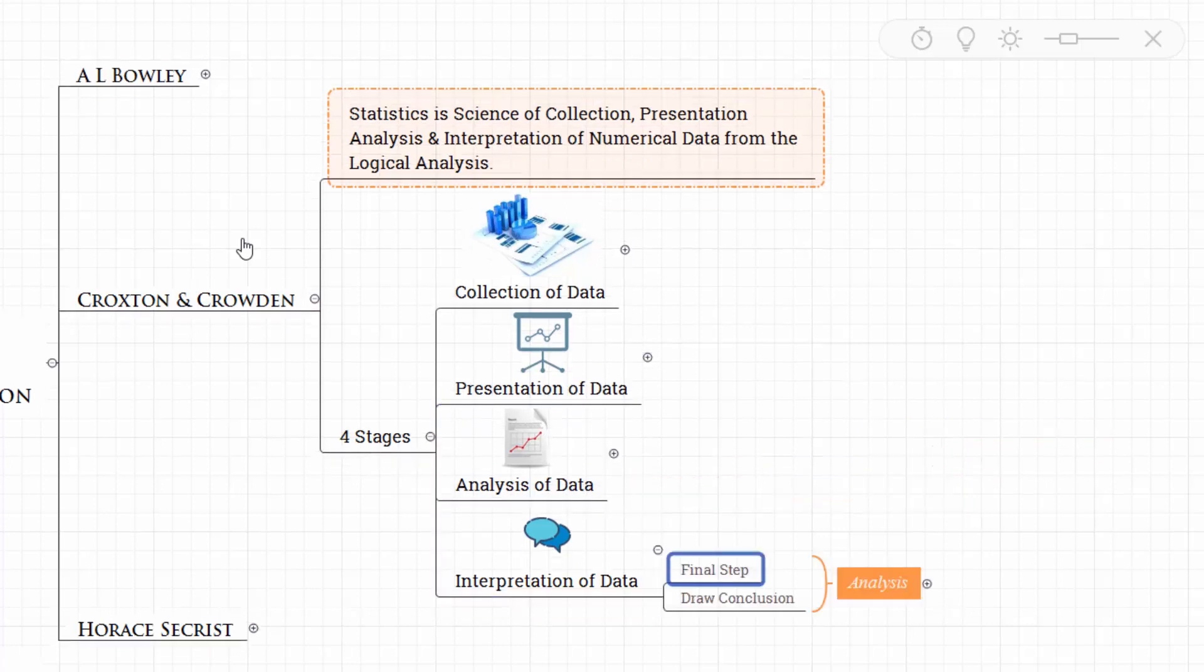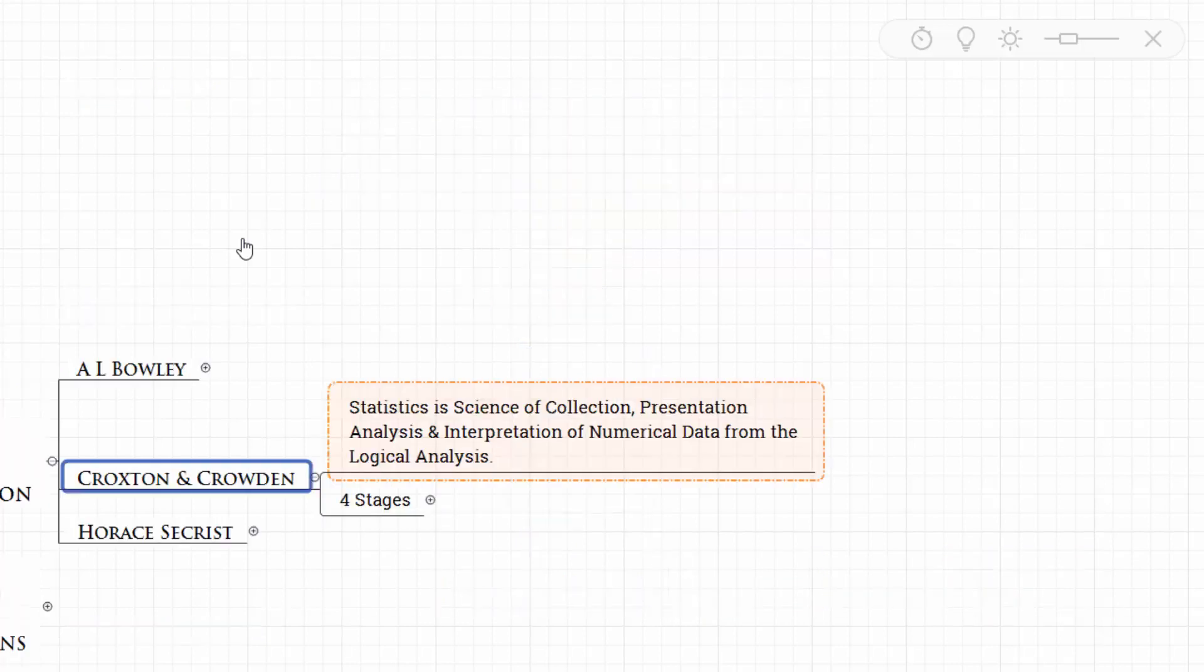Then finally, interpretation of data. This is the final step where we are going to draw conclusions from the analysis. This requires a high degree of skill and experience. So this is what we have understood from Croxton and Crowden's definition.